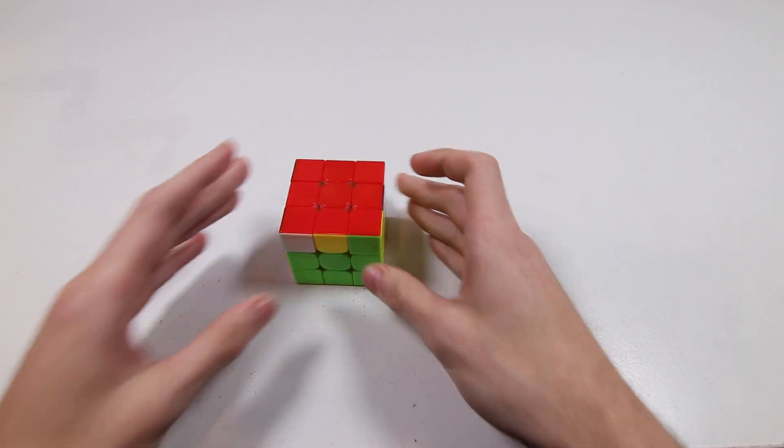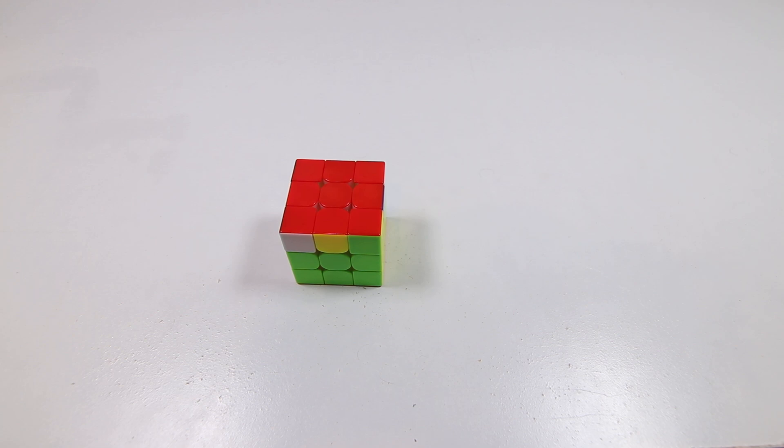So even if you mess up, you can just reframe it in your mind and tell yourself you didn't mess up, you just chose not to do F2L Gen F' for that solve.